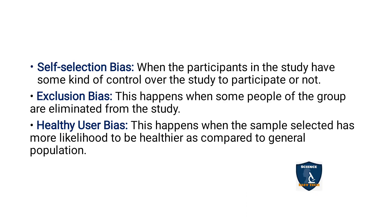Self selection bias occurs when participants in the study have some kind of control over whether they participate or not. The participants themselves decide whether they will take part in the study. This type of bias is called self selection bias.